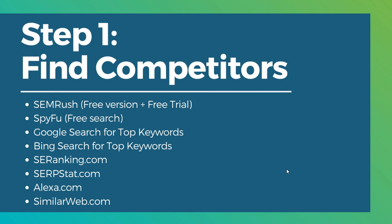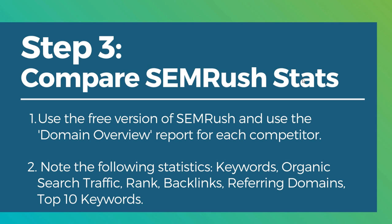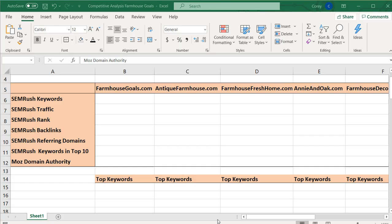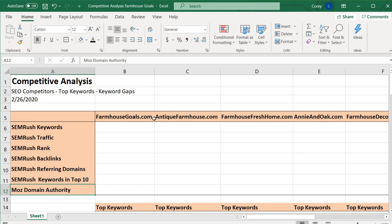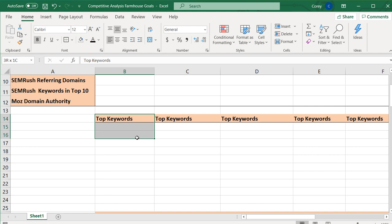Once you get past step one, make a list of your competitors. Here are some of the closest competitors for my website. Once you have a full list in step two, move on to step three: compare SEMrush stats for each individual website. Using the completely free version of SEMrush, use the domain overview report for each competitor and look at keywords, organic search traffic, SEMrush rank, backlinks, referring domains, and top 10 keywords.